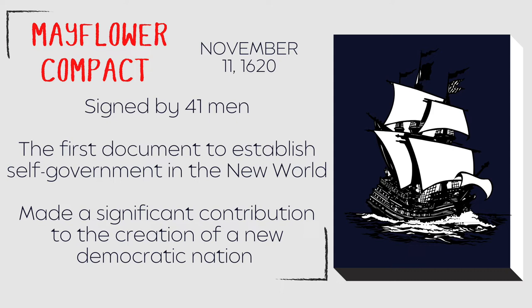The Mayflower Compact was a set of rules for self-governance created by the English settlers who traveled to the New World on the Mayflower. In 1620, the pilgrims and other settlers set sail for America, intending to go to Northern Virginia. Originally called the Agreement Between the Settlers of New Plymouth, it was the first governing document of Plymouth Colony, signed on November 11, 1620, by the 41 male passengers of the Mayflower — separatists, Puritans, and adventurers. Women and children were not allowed to sign. It created a civil body politic to pass just and equal laws for the general good of the colony — the first idea of self-government in the New World. It remained active until 1691 and influenced the Founding Fathers when they created the Constitution.